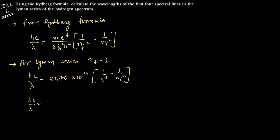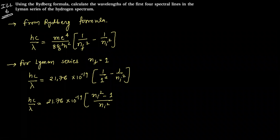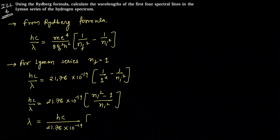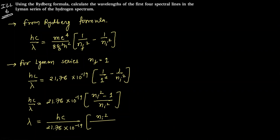hc divided by lambda equals 21.76 into 10 raised to minus 19. n i square divided by n i square minus one. Lambda is equals to